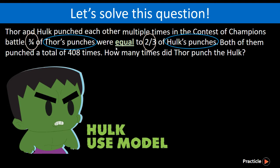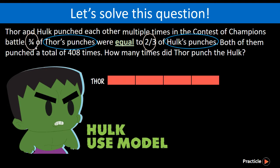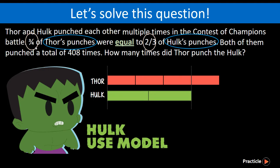Three quarters of Thor's punches were equal to two thirds of Hork's punches. This means that out of the 4 units that Thor has, 3 of them actually represent the same amount as 2 units of Hork. When we draw the model, we get something like this. And don't forget that this amount is being compared to 2 thirds, meaning this is 2 units out of the 3 units that Hork has.